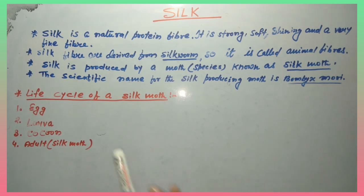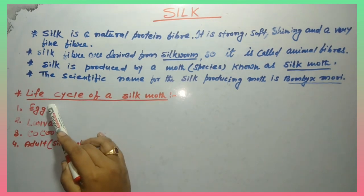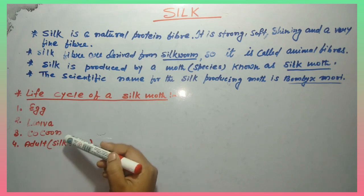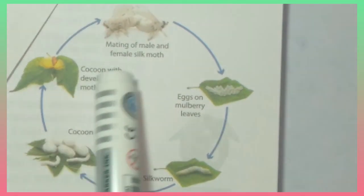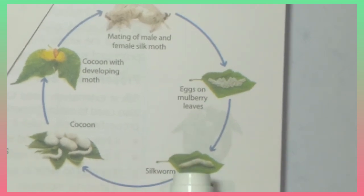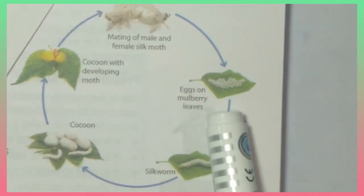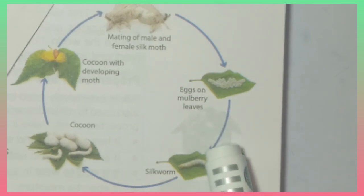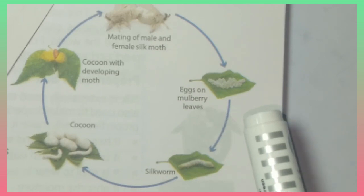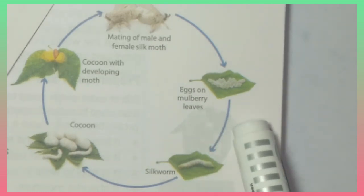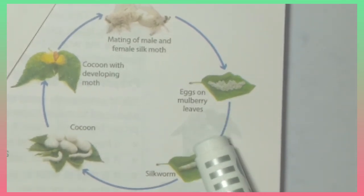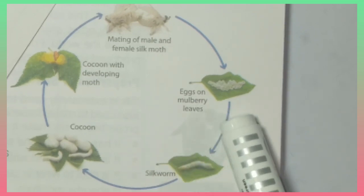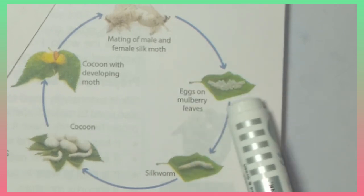Now the next is life cycle of a silk moth. This is egg, larva, cocoon, adult silkworm or silk moth. You see the picture of life cycle of silk moth. The first stage is egg. The silk moth lays egg, which is the first stage. The eggs then hatch in spring. The female species of silk moth lay eggs on leaves, mulberry leaves.